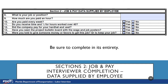Number 10 is: Are you paid every week? Mark yes or no. Number 11 is: Do you receive time and a half for hours worked over 40? Mark yes or no. Number 12 is: Did the company pay for your hard hat and vest? If an employee answers no, please be sure to ask follow-up questions — ask if they brought their own willingly or if their employer made them pay for their PPE. There is a comment section on the form in which clarifications can be written.